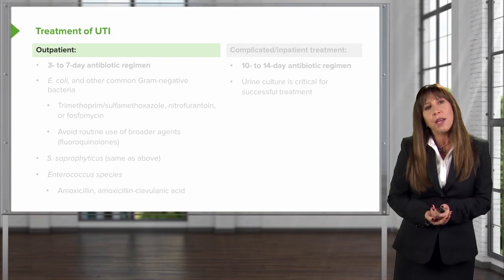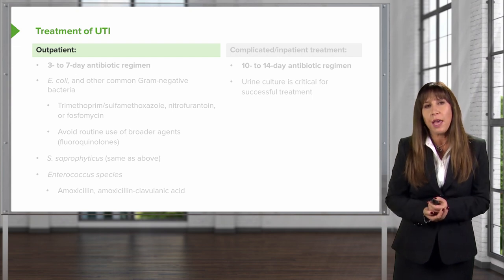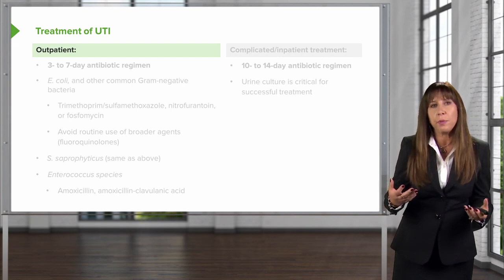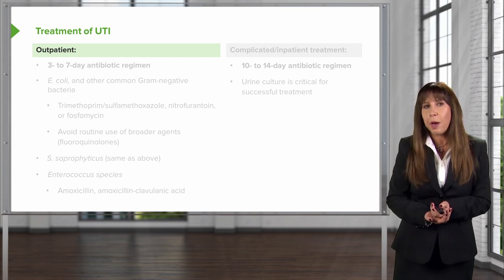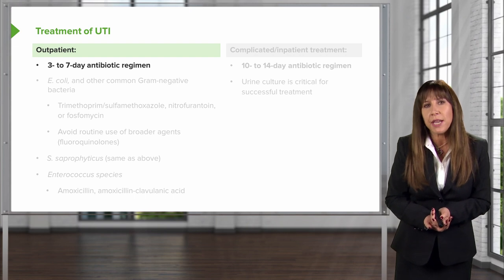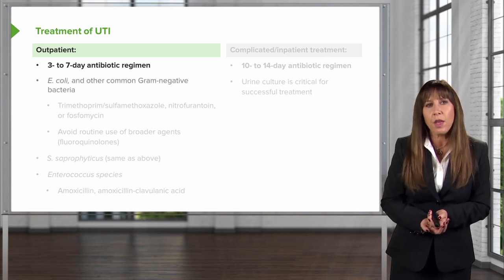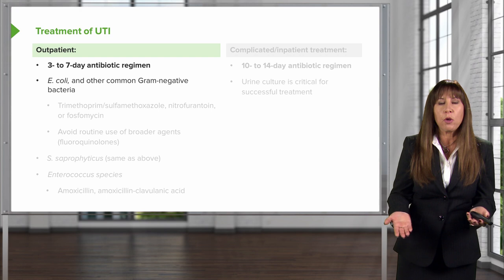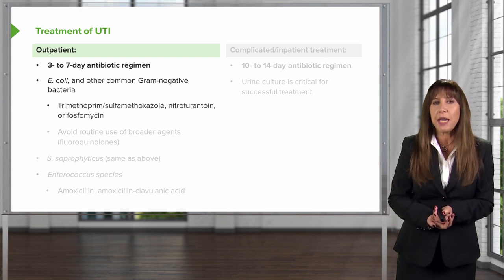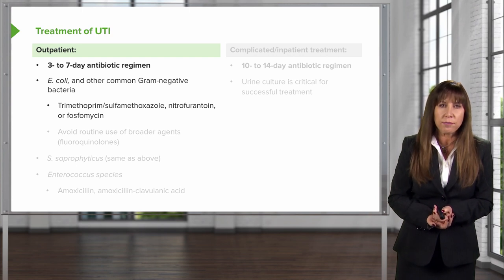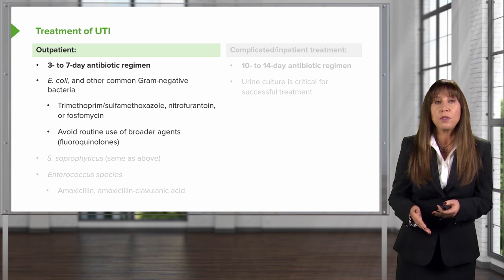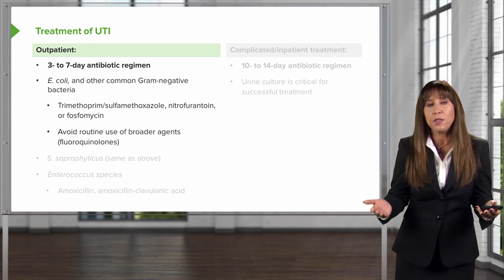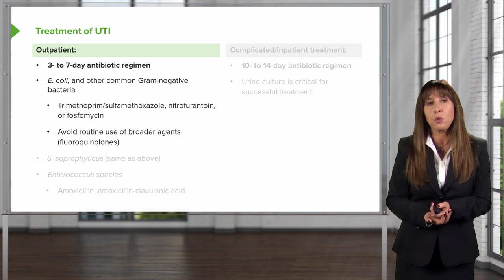Once we've made the diagnosis of UTI, we want to start treatment. If our patients are healthy with a lower urinary tract infection, we can do outpatient treatment, consisting of a three- to seven-day antibiotic regimen. For E. coli and other common gram-negative bacteria, we can use antibiotics like trimethoprim-sulfamethoxazole, nitrofurantoin, or fosfomycin. We want to avoid routine use of broader agents like fluoroquinolones so we don't generate multidrug-resistant organisms.